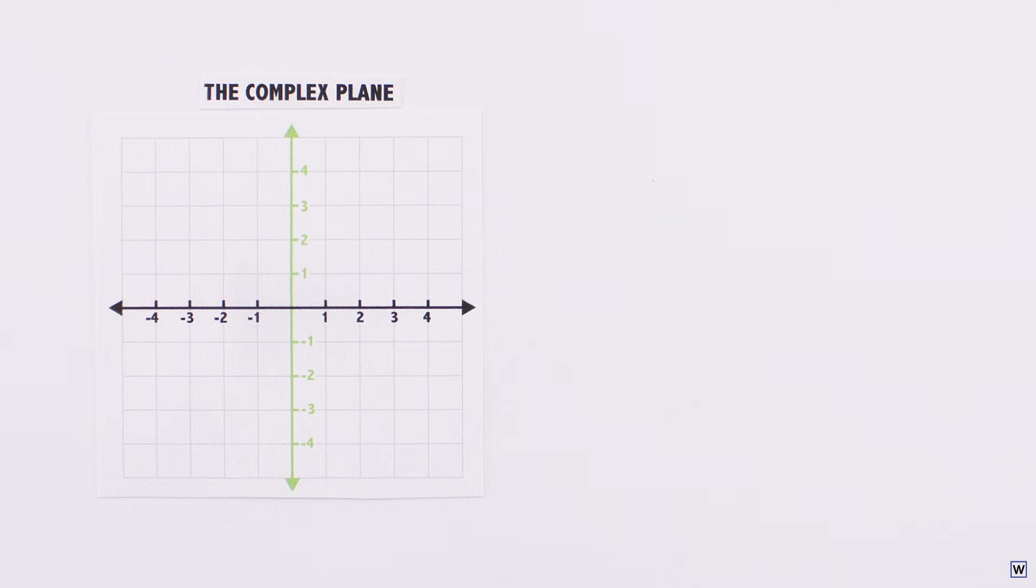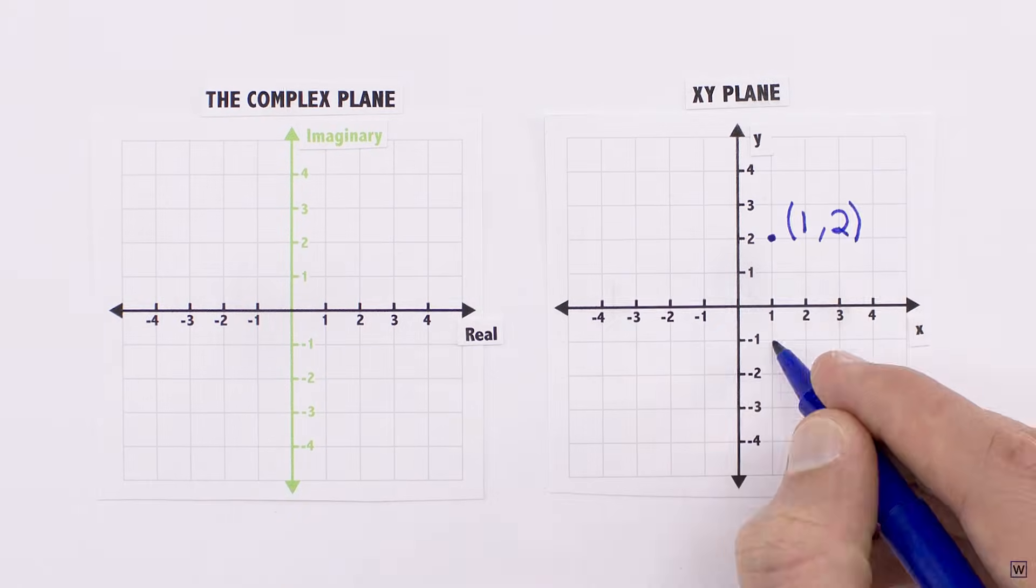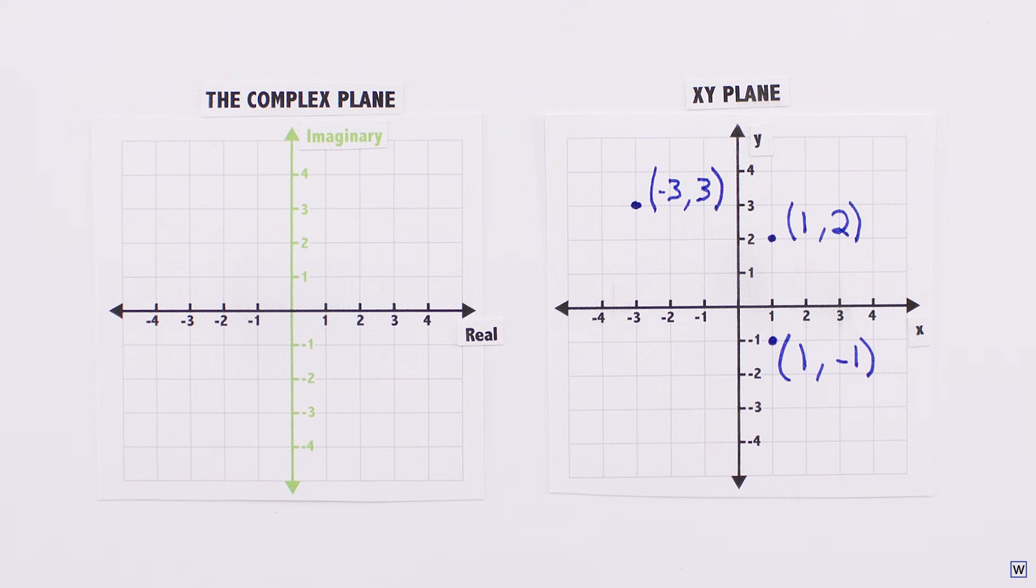The complex plane is an extension of the number line, where we include the imaginary dimension vertically. Just as we can plot xy coordinates on the xy plane, we can plot complex numbers on the complex plane.